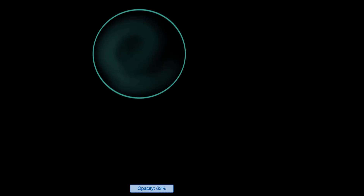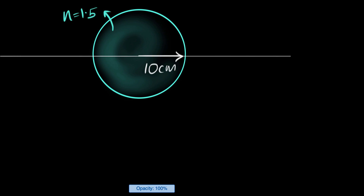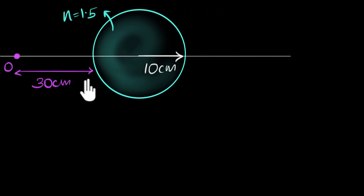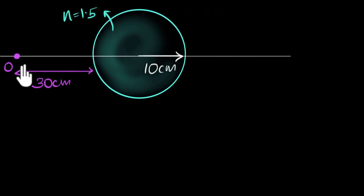We have a glass sphere which has a radius of 10 centimeters and it's made up of a material whose refractive index is 1.5. Suppose we keep an object, let's call it O, at a distance of 30 centimeters from the sphere. We need to figure out where its image is going to be.